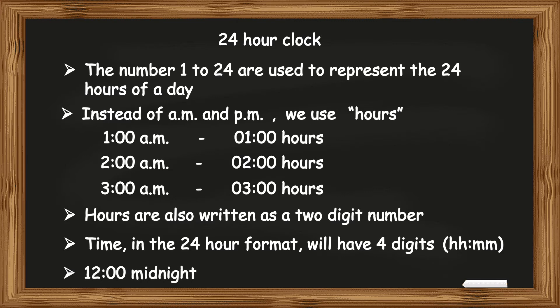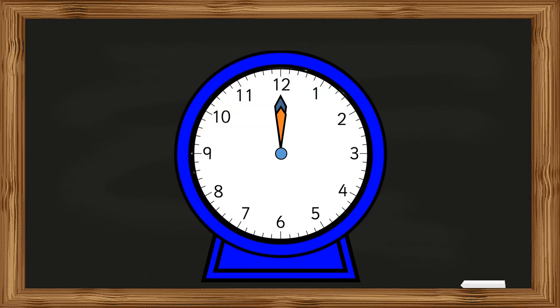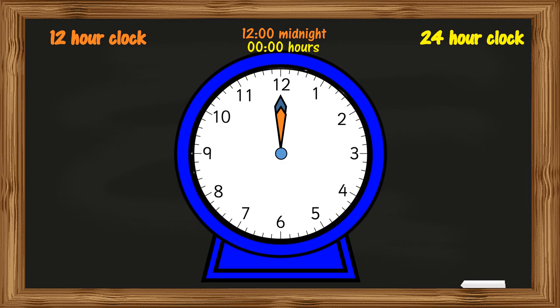Now, let us see how to express the time or the hours of a day using a 12-hour clock as well as a 24-hour clock. The day begins at 12 midnight, which is written as 0000 hours using the 24-hour clock.